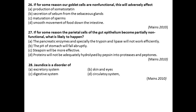Question twenty-seven: If for some reason the parietal cells of the gut epithelium become partially non-functional, what is likely to happen? Parietal cells produce HCl. The pancreatic enzymes, especially trypsin and lipase, will not work properly — that is wrong. The pH of the stomach will fall abruptly — though pH does fall, it is not the correct answer. Ptyalin will be more effective — no, that is also not correct.